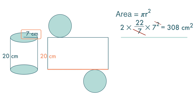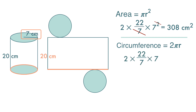How about the length of the rectangle? It is actually the circumference of the circle. So to find the length of the rectangle, we need to find the circumference of the circle, which is 2 pi r — 2 times 22 over 7 times 7. We get 44 cm.